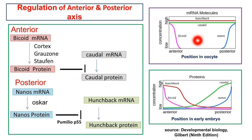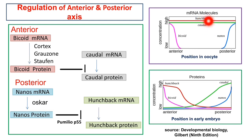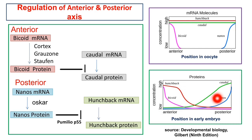Before fertilization, bicoid is present in high amounts at the anterior region and nanos at the posterior part, while hunchback and caudal mRNAs are present at equal concentrations throughout the oocyte. After fertilization, hunchback is present only at the anterior end and caudal at the posterior side, because bicoid acts as a transcriptional activator of the hunchback gene, increasing its protein level at the anterior region of the embryo.